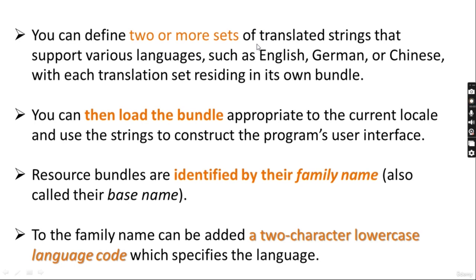You can define two or more sets of translated strings that support various languages such as English, German, or Chinese, with each translation set residing in its own unique resource bundle. Then load the bundle appropriate to the current locale that you are working on, and use the strings to construct the program's user interface.